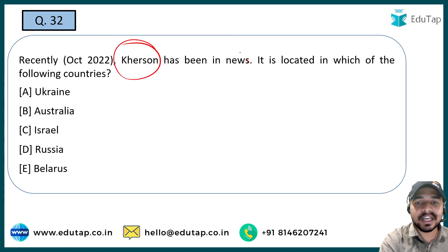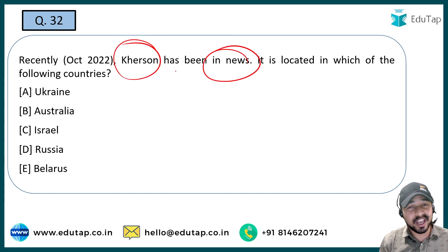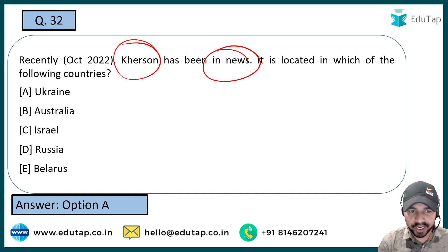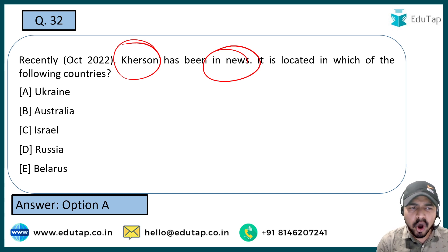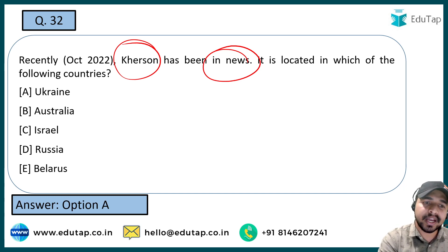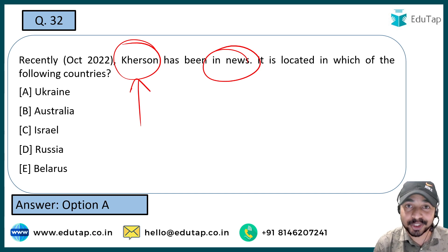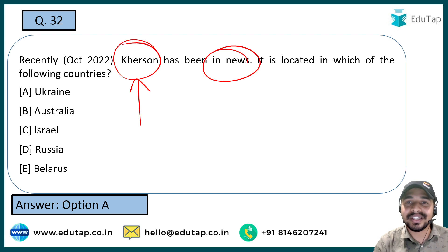The next question: Kherson has been quite frequently in the news recently. Which is the country where such attacks are happening? The country is basically Ukraine. You are all aware of the Russia-Ukraine war, and Kherson is a particular place in Ukraine which was recently in the news.